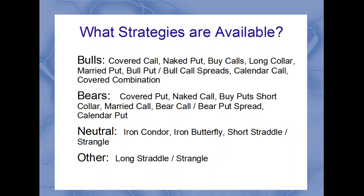For bearish strategies, we've got covered puts, naked calls, buying puts, the short collar — shorting stock and selling a put while buying a call to protect it — married calls, bear call credits, bear put debits, and calendar put spreads. For neutral investors, we have iron condors, iron butterflies, short straddles and short strangles. Long straddles and strangles are listed as 'other' — they're really the opposite of neutral. You don't know the direction, but you want a big move.